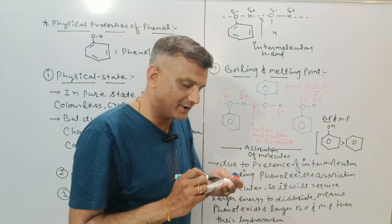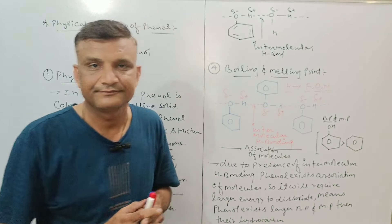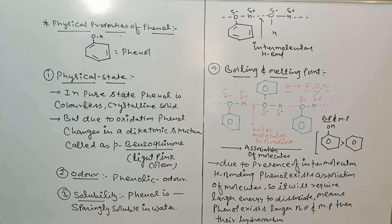So this was about the four important physical properties regarding phenol. A very important question is: why does phenol exist with a higher boiling and melting point than its hydrocarbon? The reason is the formation of intermolecular H bonding and the resulting association of molecules.